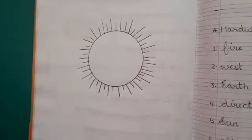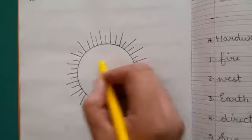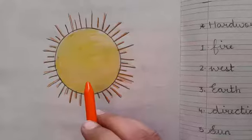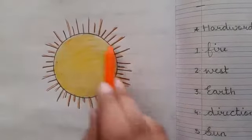Now we will color yellow and orange. You have to color the sun in this manner.